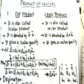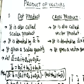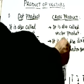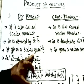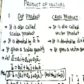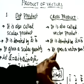In this class we are going to discuss a few concepts and formulas of product of vectors. We are having two types of products: dot product and cross product. Dot product is also called scalar product, and cross product is also called vector product. The dot product of two vectors gives a scalar quantity — just a number — whereas cross product gives a vector quantity.